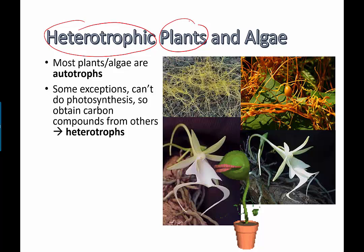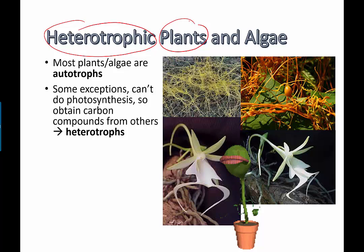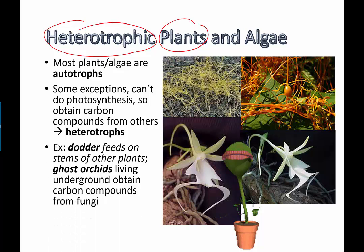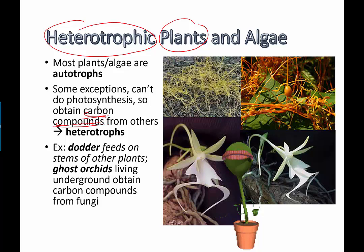We eat things, it goes through our digestive system and gets absorbed into our bloodstream. These plants don't necessarily have big jaws, but they can still suck up nutrients and take them from other places without having to manufacture them themselves. So these are considered heterotrophs — heterotrophic plants and algae — obtaining carbon compounds from other sources and not making them themselves directly.